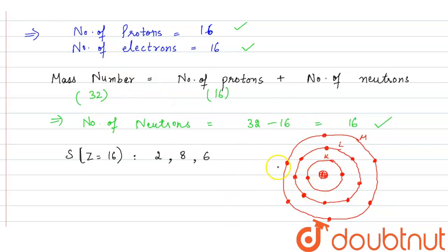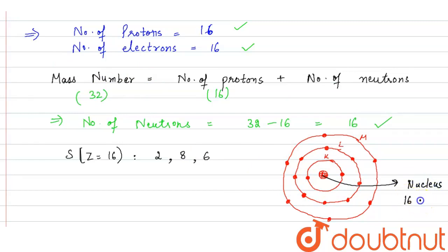This is the arrangement of electrons in the atom of sulfur. At the center we have the nucleus, which contains 16 protons and 16 neutrons. This is the diagram. I hope you understood the explanation. Thank you.